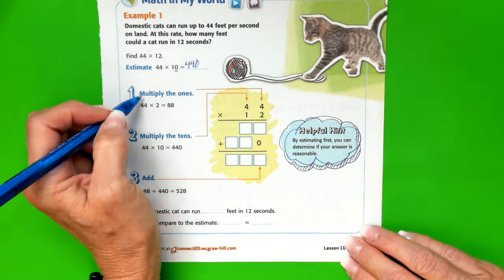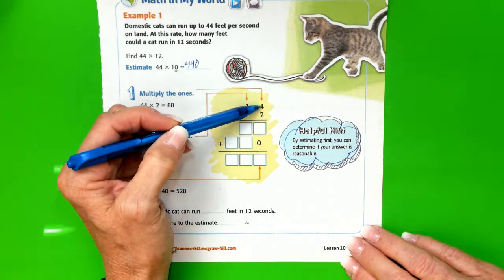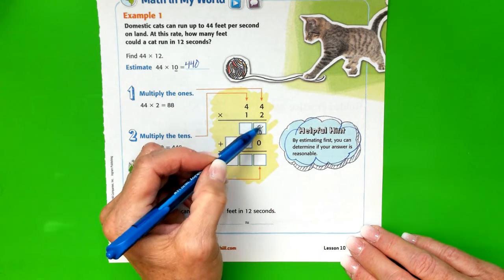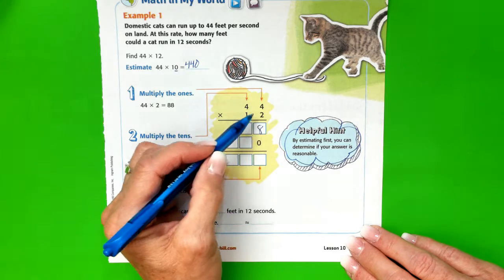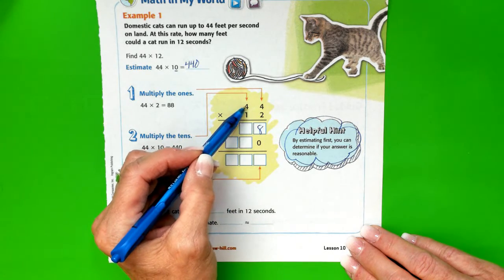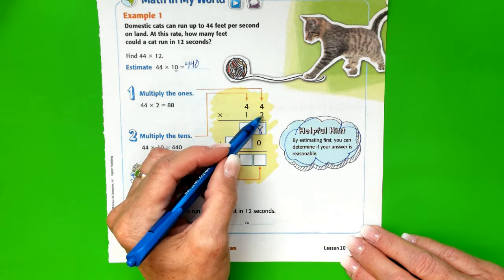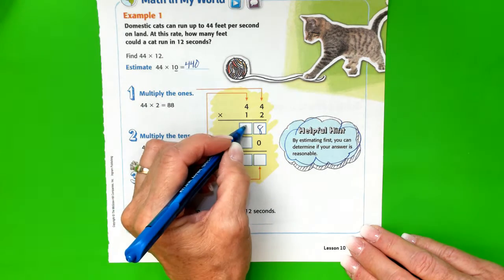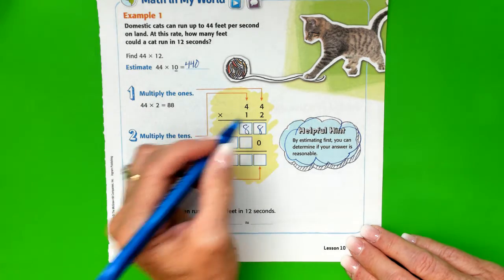Let's begin. We start in the ones column, and we're going to multiply 4 times 2, and that gets us 8. Once we've recorded something below the line, now we need to multiply the tens by the 2. 4 tens times 2 is 8 tens, or 80, so we have 88.